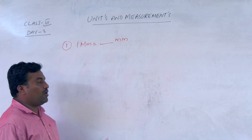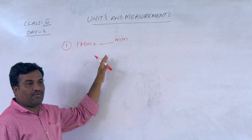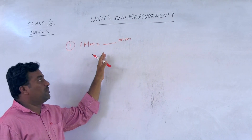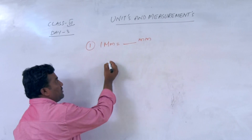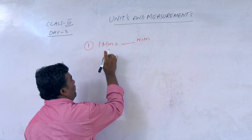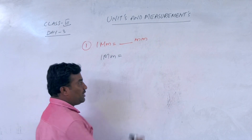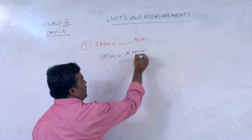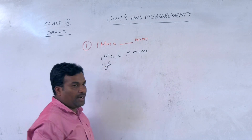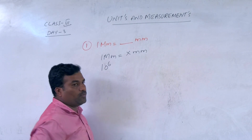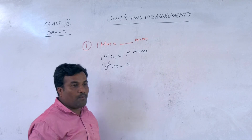When one system of unit is converted to another system of unit, first of all, you convert all given units to the SI system. So I write: 1 megameter equals x millimetres. Now we find x. Mega means 10 to the power of 6 — it is a multiple — so mega equals 10 to the power of 6 metres, equal to x into millimetres.